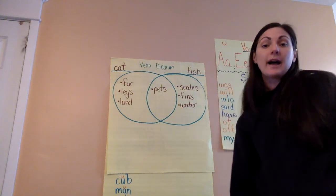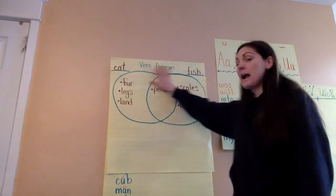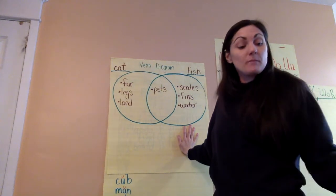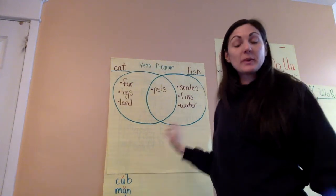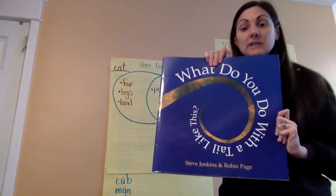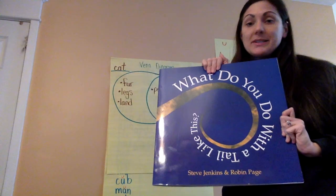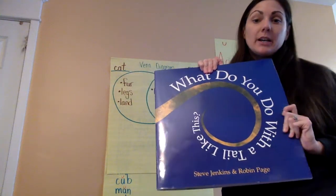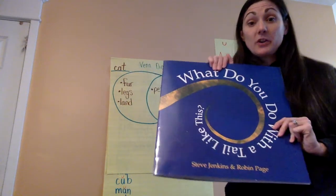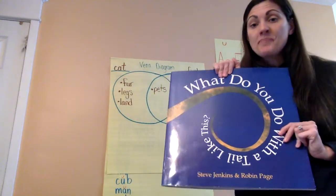So if we were in class today, this would be my I do. For 'What Do You Do With a Tale Like This?' - since it's all about different animals, we're going to read about their noses and their ears. Today we are just going to focus on noses and ears and then we'll return to this book tomorrow.